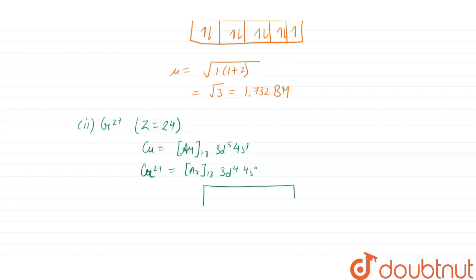Electrons will be filled like this: 1, 2, 3 and 4. Here we have 4 unpaired electrons.